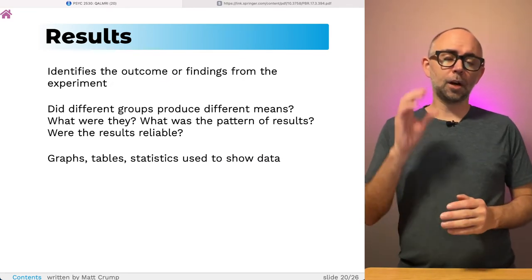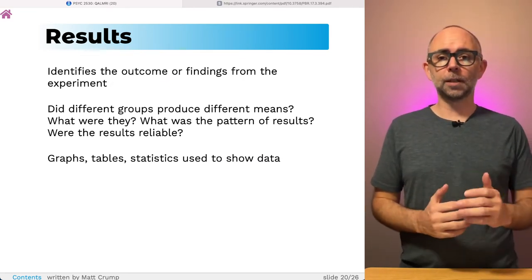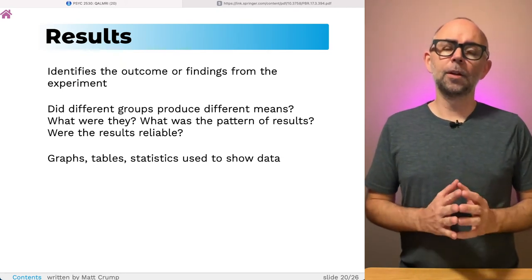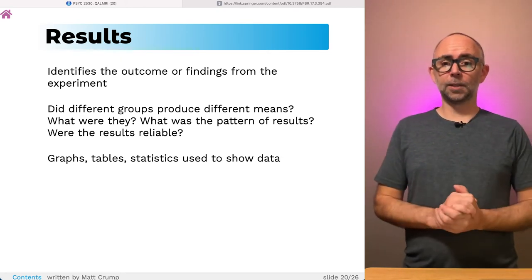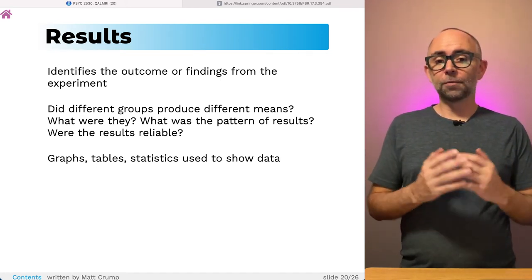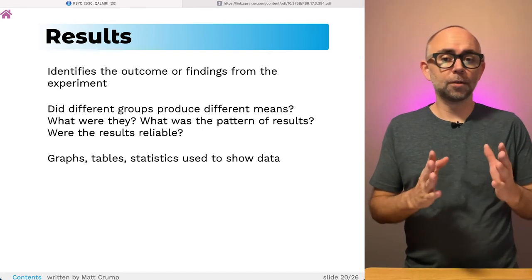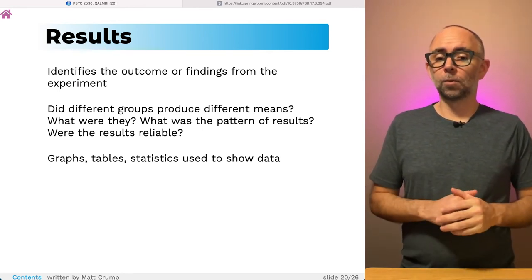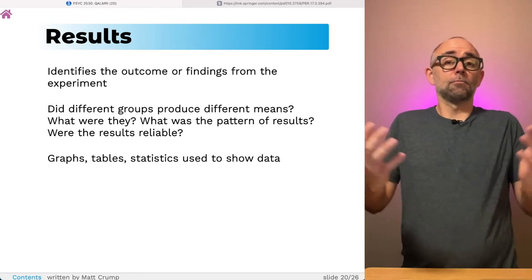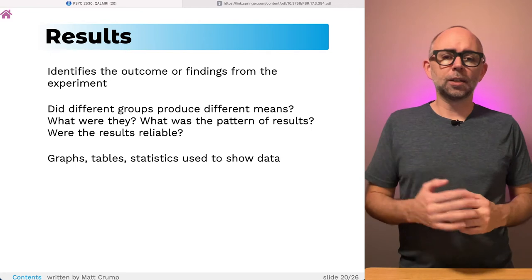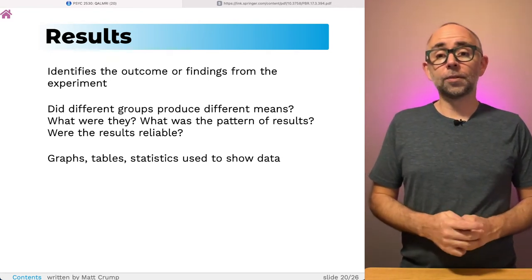This leads into the R section of QALMRI, the results. Here, you're trying to identify the outcome or findings from the experiment. So, did the different groups or different conditions produce different patterns of performance? What were the patterns of performance? What was the results? Were the results reliable? We could look at graphs, tables, statistics, and all sorts of things used to show the data.